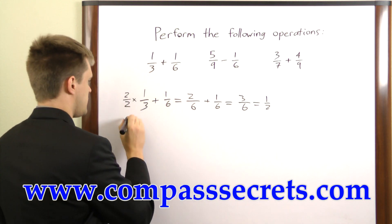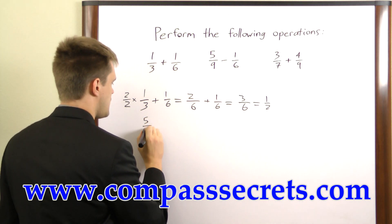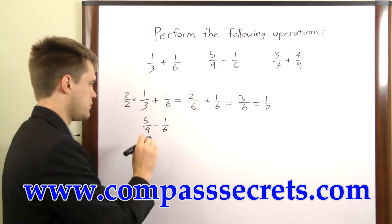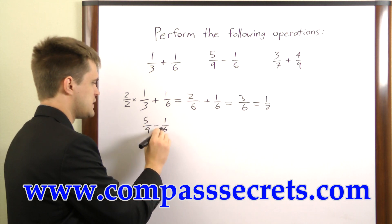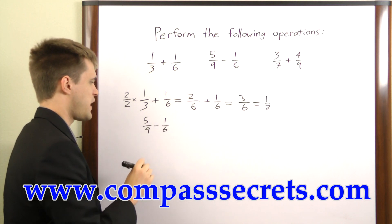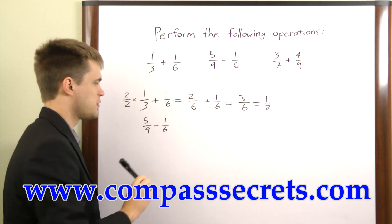In this example, we have 5 over 9 minus 1 over 6. The least common multiple between 9 and 6 is 18, so we have to multiply both of these fractions by something to get that common denominator.